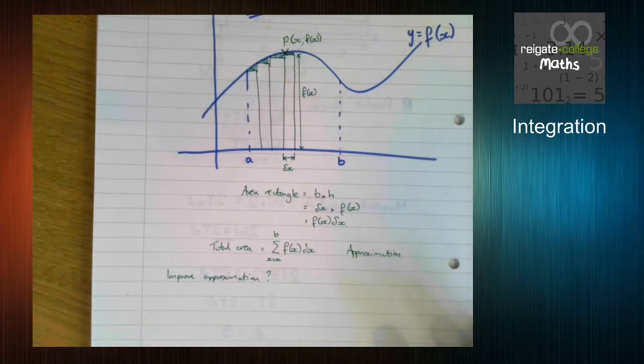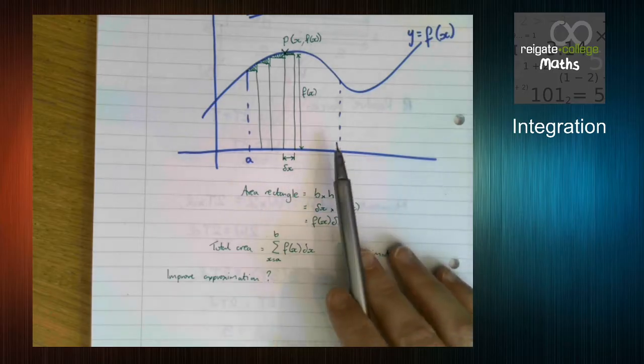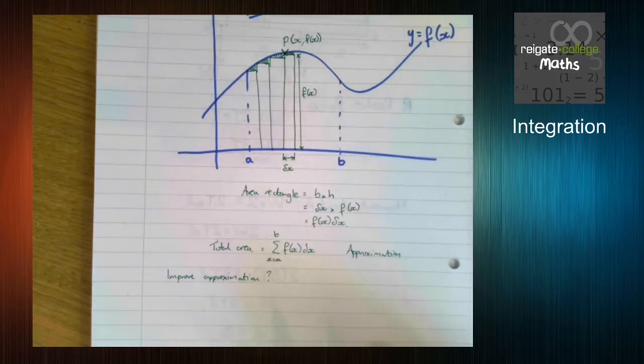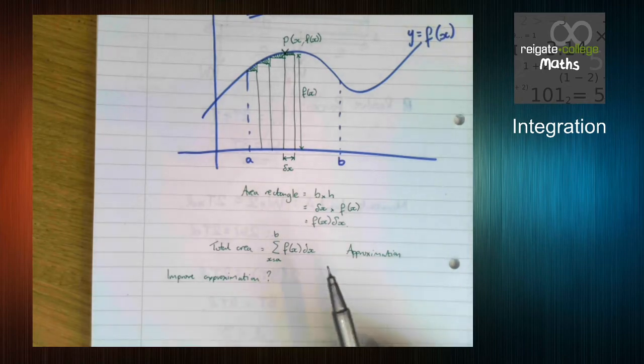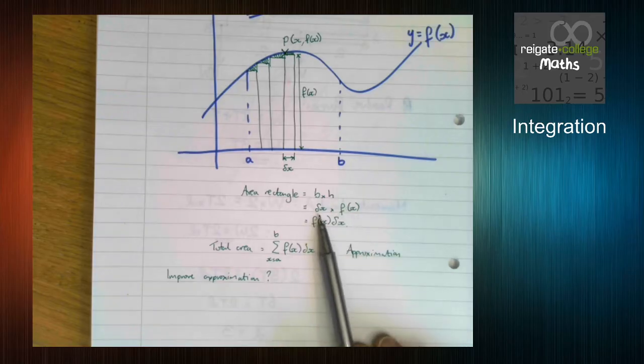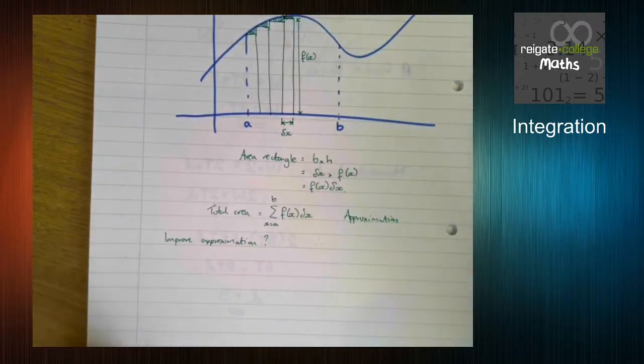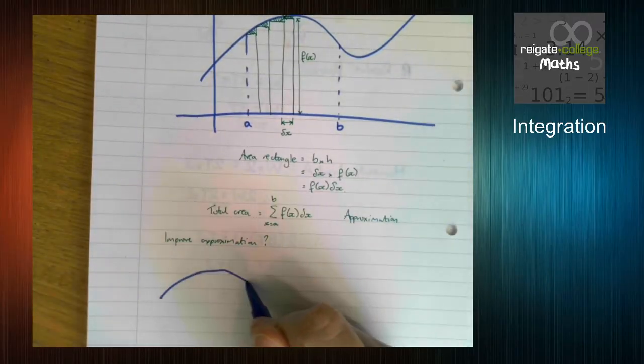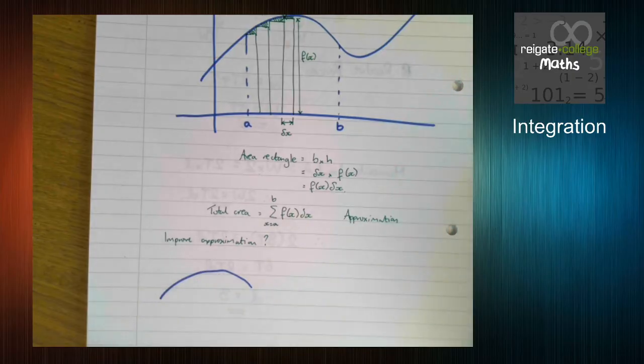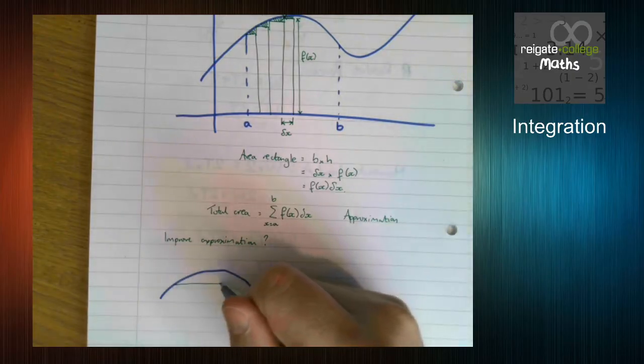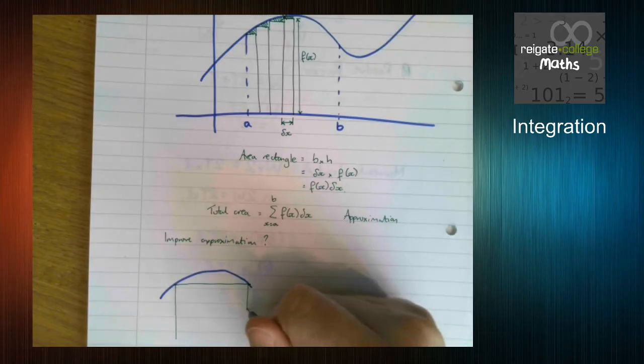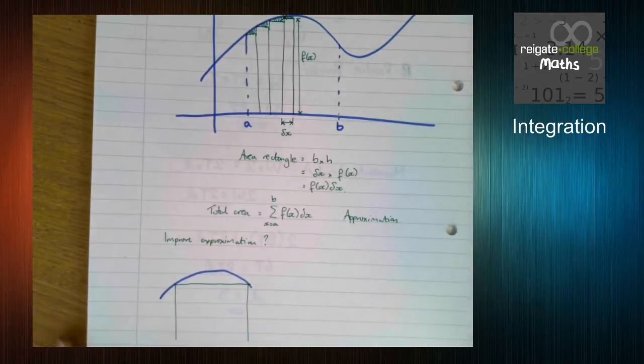So obviously we could use different shapes and that's something that we'll look at later on, using not a rectangle, using something different. But what's another way still using this shape that's easy to work out the area of? Well, let's have a think. If we've got this shape here and we only use one rectangle to approximate it, that's not a particularly good approximation, is it?